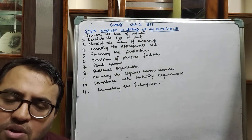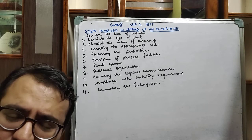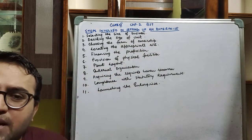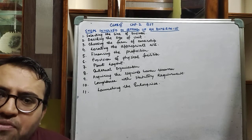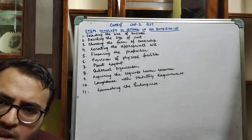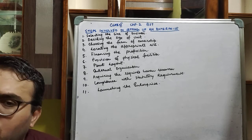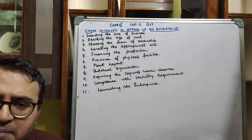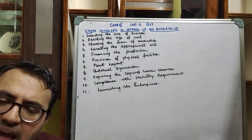The entrepreneur or the person who is setting up the business first has to select the line of business. The line of business means what should be the nature of the business — whether it is an industrial business, a trading type of business, a manufacturing concern, or a service concern. The entrepreneur should be very sure and fixed about which line of business to enter, be it industrial, trading, or service.